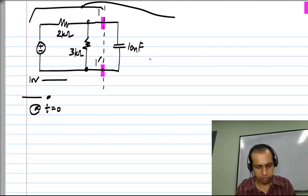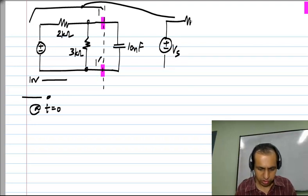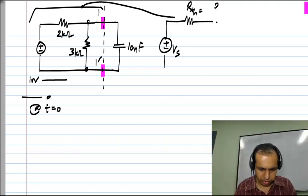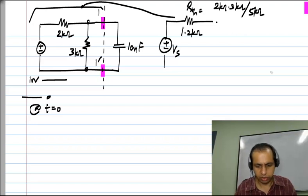I will not show the steps, but you can work this out for yourselves. I will have some VS in series with a resistance. The resistance happens to be the parallel combination of these two and that will be 2 kilo ohms times 3 kilo ohms divided by 5 kilo ohms, which is basically 1.2 kilo ohms.